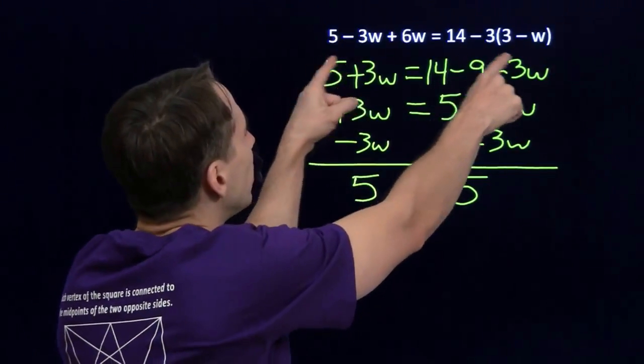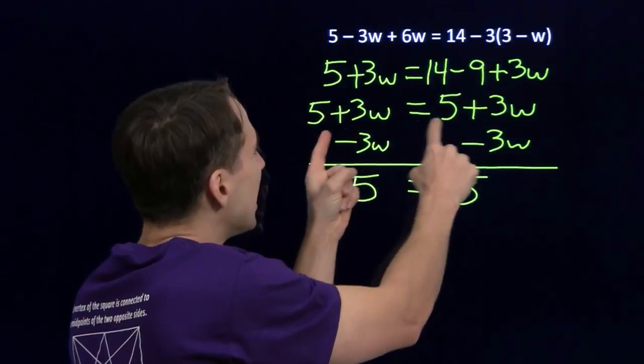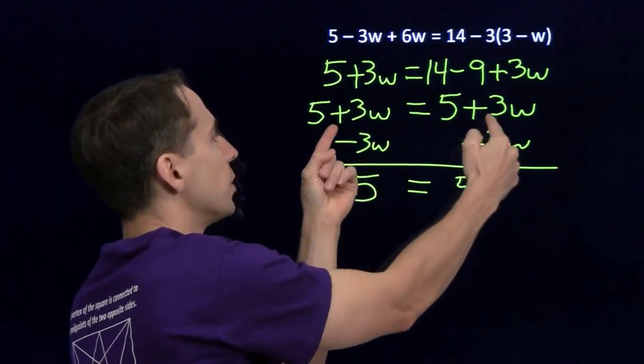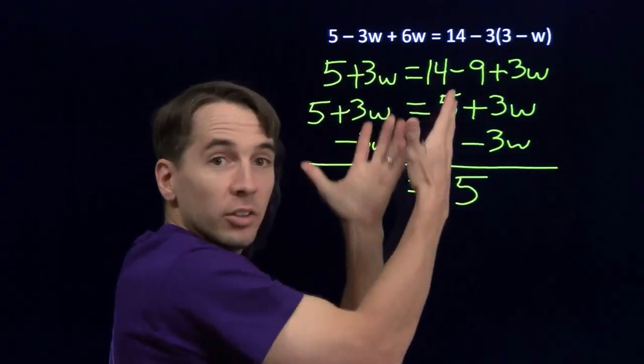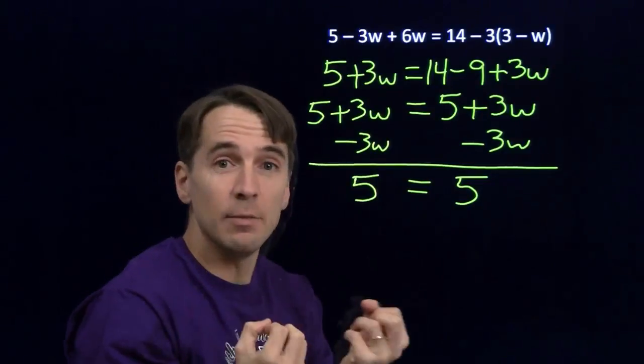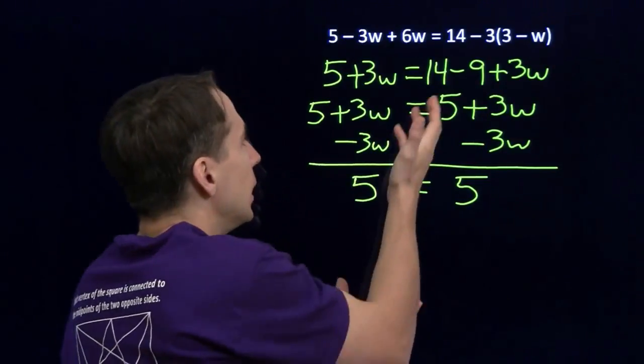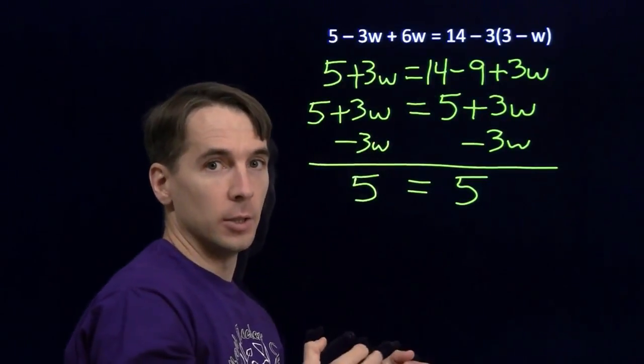Hey, that's what this is telling us. When we simplify both sides of this equation, we get the same thing on both sides. That tells me no matter what I put in for w, these two are going to be the same. No matter what I put in for w, both sides of the original equation are going to give the same value. So that means every single value of w is a solution to this equation. So all numbers work in this equation.